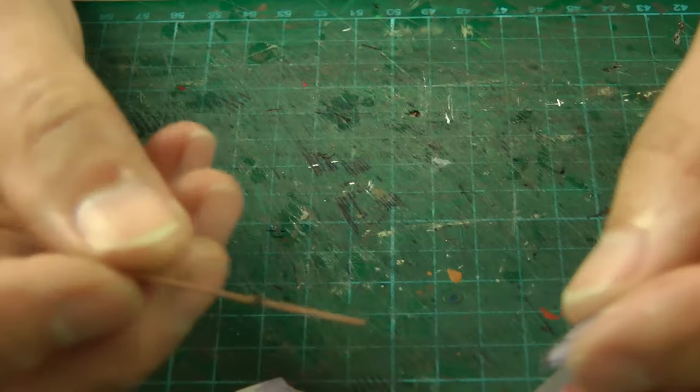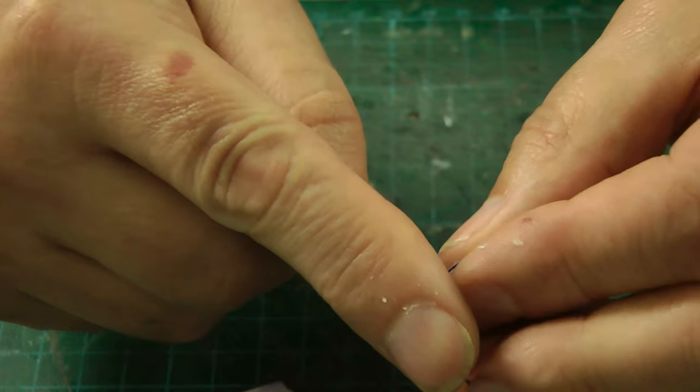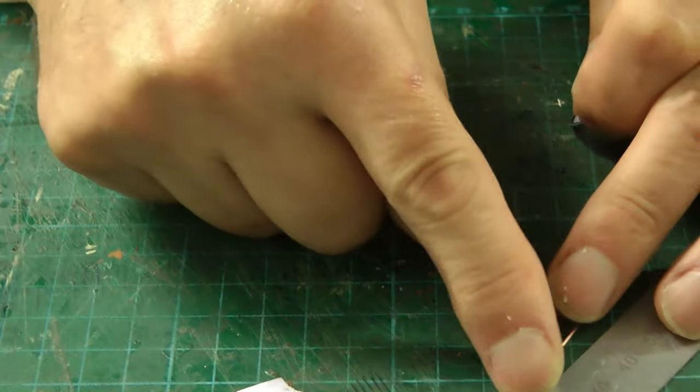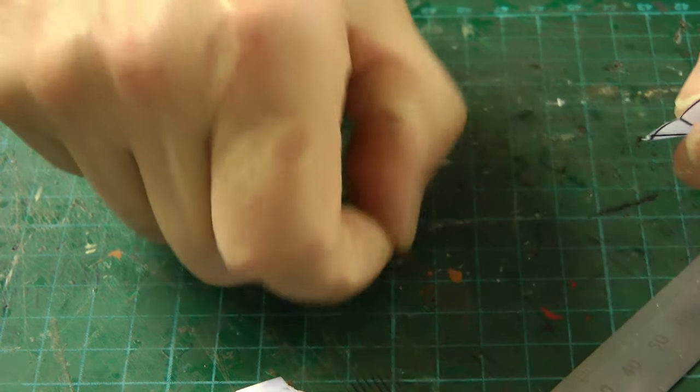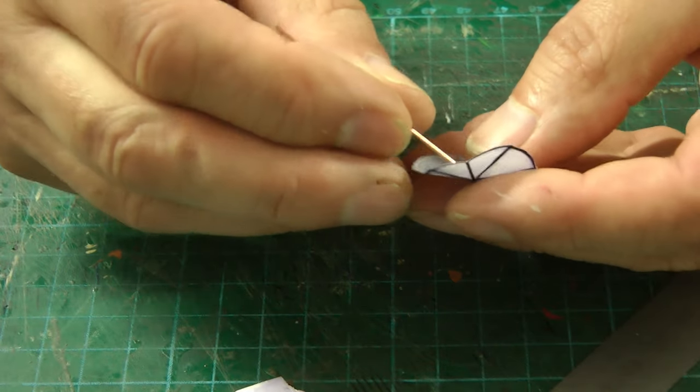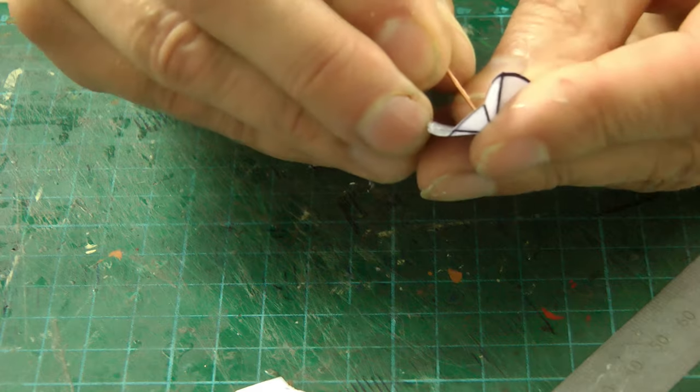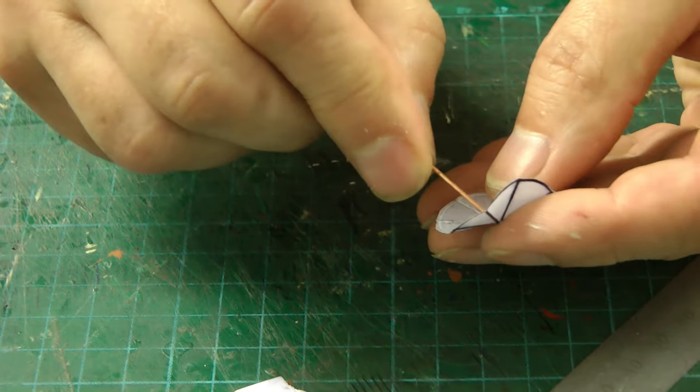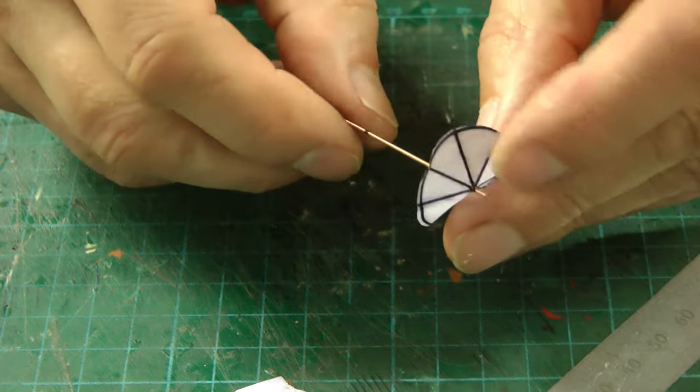Right, so we've got a 0.8 welding rod. You can see I've already marked it. I've marked that at 20 millimeters. So what I'll do, I shall pierce the brolly right in the center, give that a little bit of twist to go through.